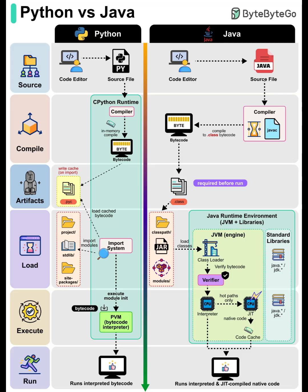What happens when you want to run that code? In Python, your source is handed off right away to the CPython runtime. Here, Python actually does a little compilation just in time, turning your script into bytecode. This bytecode isn't stored on disk immediately — instead it's used in memory — but Python will also cache it as .pyc files if you import modules.